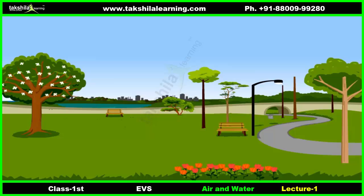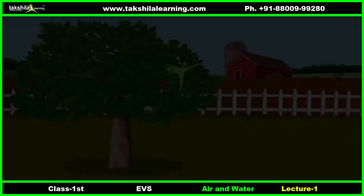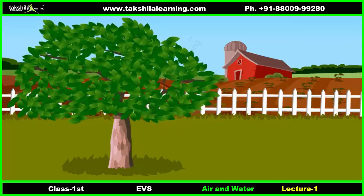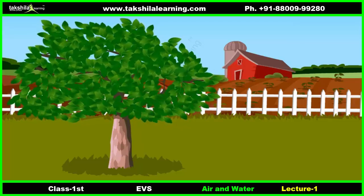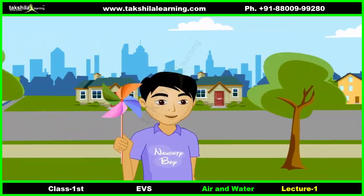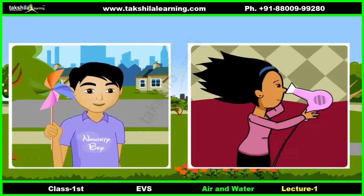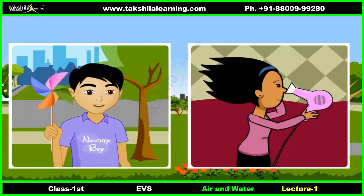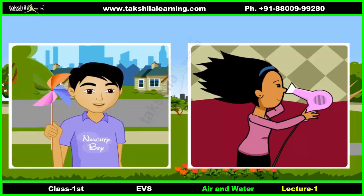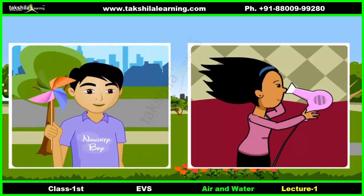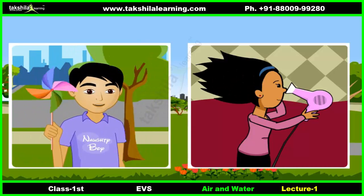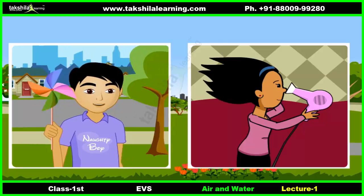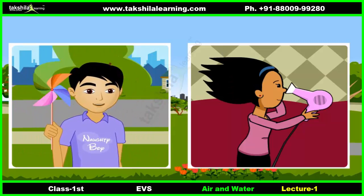Dear friends, do you have any idea as to how a kite flies? How do the leaves of a tree move? Or have you ever played with a paper windmill? How does this happen? Friends, this happens due to the movement of air. Air is present everywhere around us, and we can feel it.